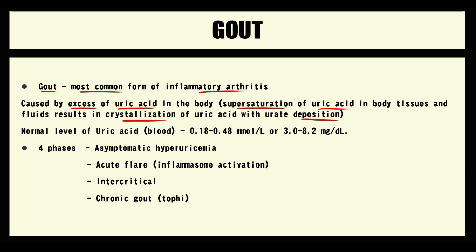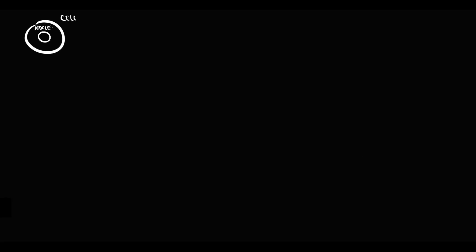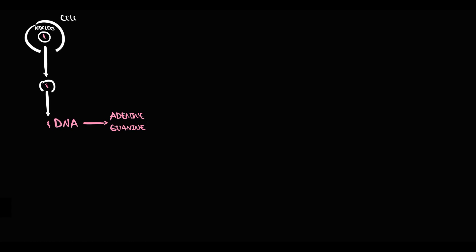To explain why gout develops, we have to recall uric acid metabolism. When cells die, the inner content is released into the blood, including the nucleus. Then nuclear membrane undergoes degradation with release of intranuclear content, which is DNA. The DNA molecule is composed of purines and pyrimidines. Purines are adenine and guanine.